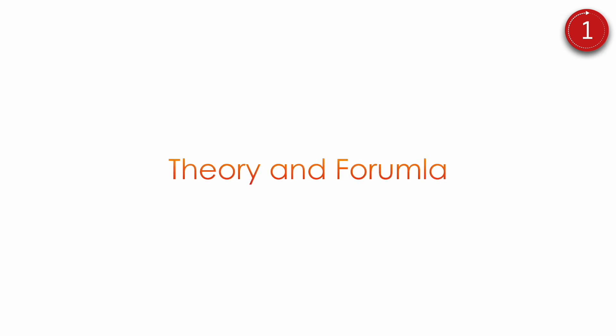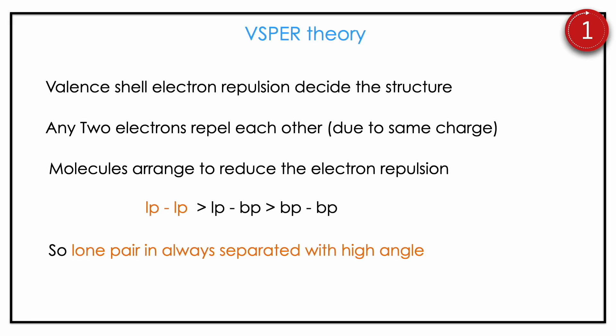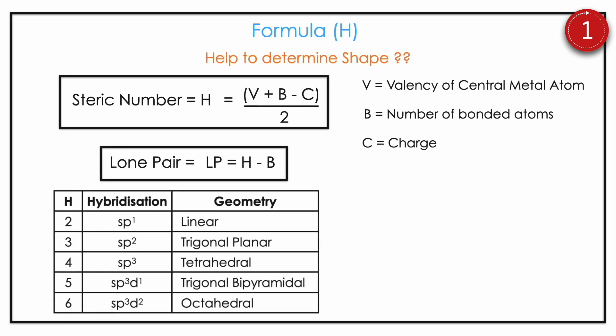Let us get into more detail — the theory and formula for VSEPR theory. VSEPR stands for Valence Shell Electron Pair Repulsion, meaning repulsion decides the structure because electrons of the same charge repel each other. Repulsion order: lone pair–lone pair is most repulsive, then lone pair–bond pair, then bond pair–bond pair. The key formula: H = (V + B − C) / 2, where V is the valence of the central metal atom, B is the number of bonded atoms, and C is the charge. Lone pair = H − B. Then calculate the steric number to get hybridization and geometry.